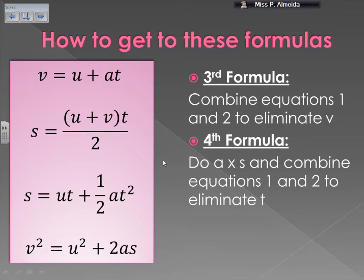For the third formula, you need to combine equations one and two and eliminate V. So substitute V here as U plus AT, and then carry on — you will get UT plus one half of AT squared. Give it a go and try it.